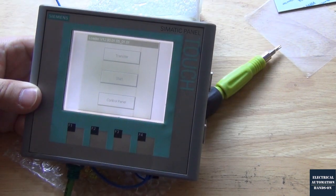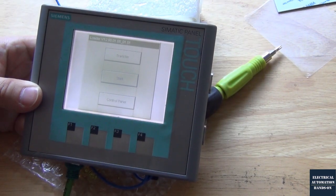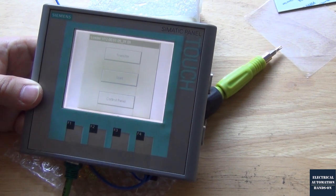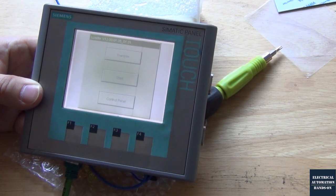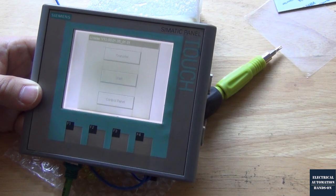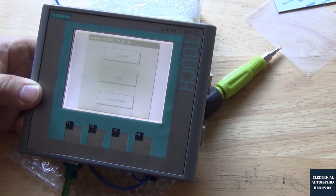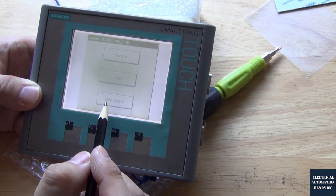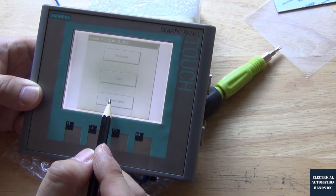After we replace this new touch screen, we better do a calibration to calibrate our touching position. We better recalibrate the touching function. So to enter the recalibrate function, reboot the HMI. And while it's rebooting, we can jump to the control panel.